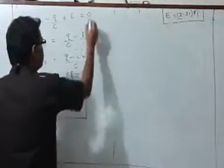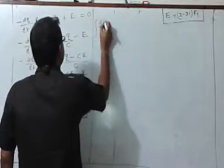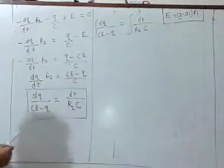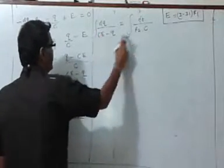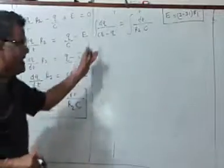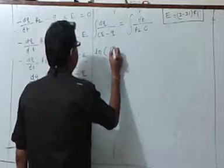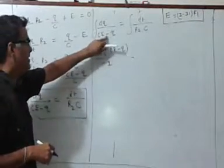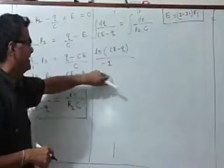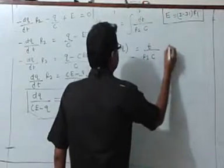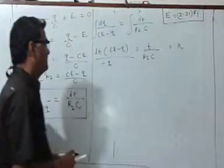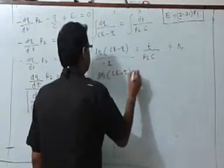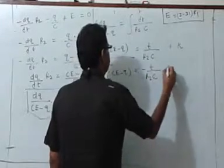Now let me integrate both sides. The integral of dQ upon (CE minus Q) equals the integral of dt upon R2 C. Integrating both sides and noting the coefficient of Q is minus one, we get: ln(CE minus Q) divided by minus 1 equals t upon R2 C plus a constant of integration k. Transferring the minus sign to the other side gives: ln(CE minus Q) equals minus t upon R2 C plus k.